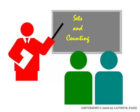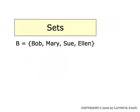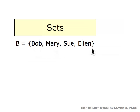This movie will introduce the concept of sets and some counting techniques useful when categorizing objects. Here's an example of a set. Sets are commonly denoted with a capital letter of the alphabet. This set is named capital B. The set has four objects called the elements of the set — Bob, Mary, Sue, and Ellen. These curly brackets are used frequently to denote a set, with the elements listed inside the curly brackets.